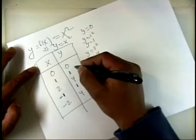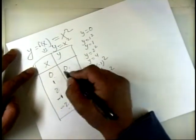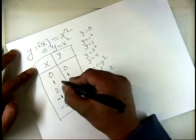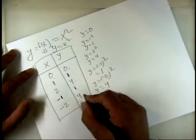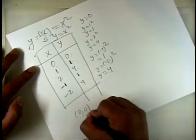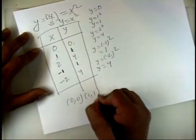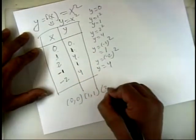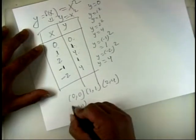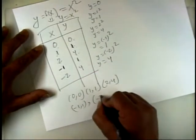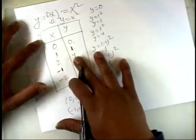So we got five points total. Let's write these points: (0,0), (1,1), (2,4), (-1,1), and (-2,4). These are the points we got from this function. We're going to plot these points in the graph now.